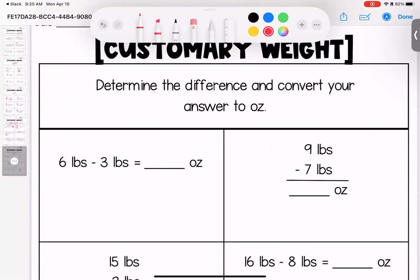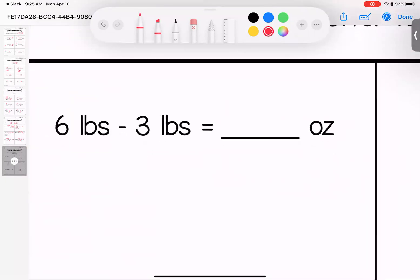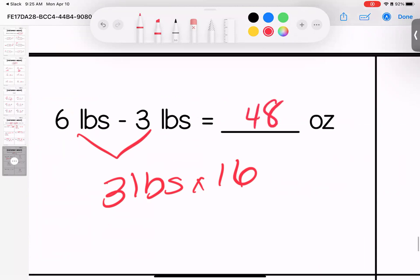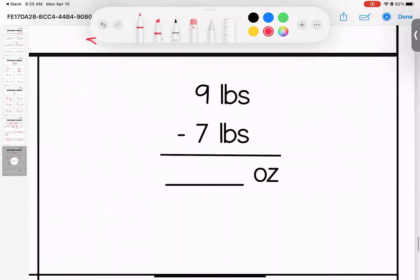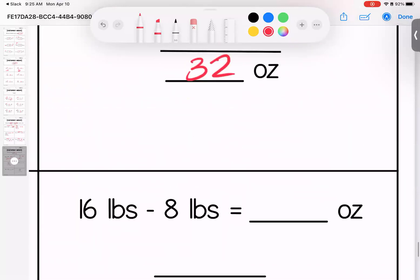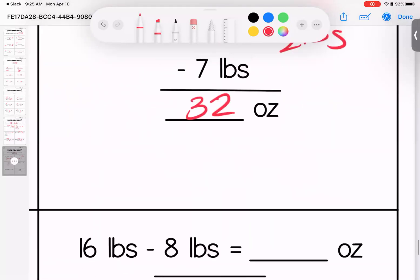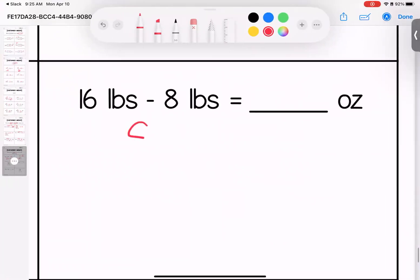All right, nuggets, looking at the difference and then convert to ounces. So looking at it backwards, three pounds, or I'm sorry, six pounds minus three pounds is three pounds. Multiply by 16 to convert that. 16 times three gives me 48 ounces. Over here, nine pounds minus seven. Nine minus seven is two pounds or 32 ounces because I take my two and I multiply by 16. Down here, 18 minus eight, or I'm sorry, 16 minus eight is eight pounds. If I multiply that eight by 16, I end up with 128 ounces.